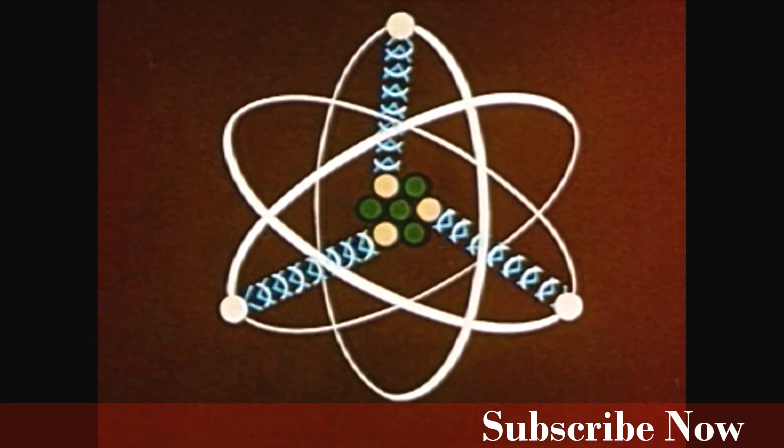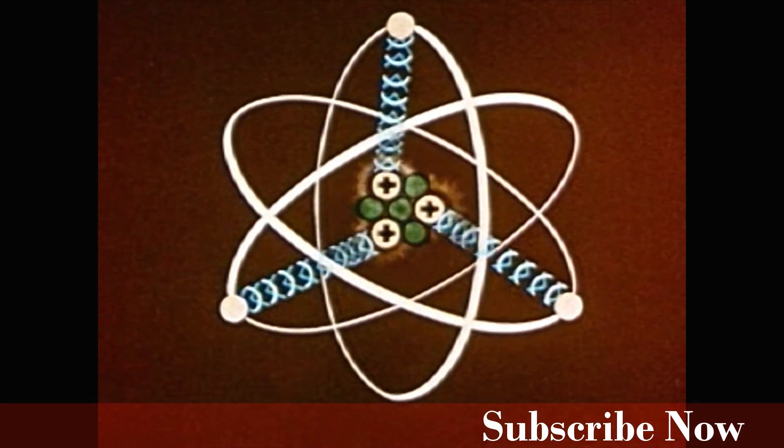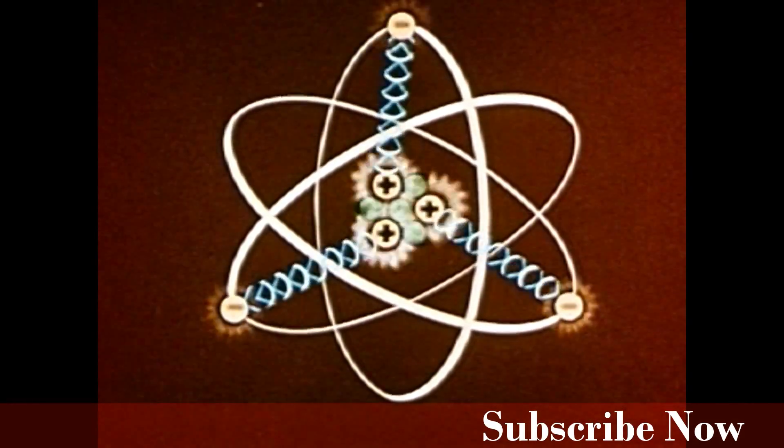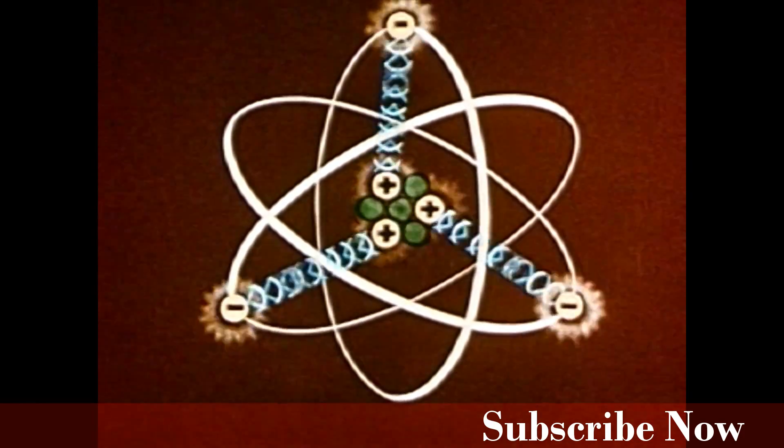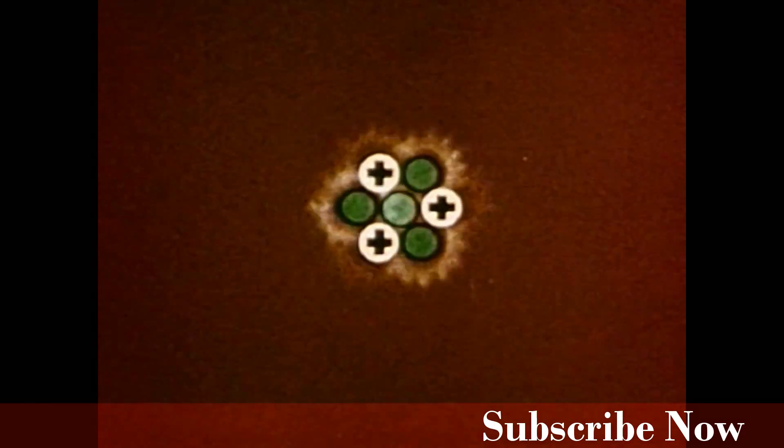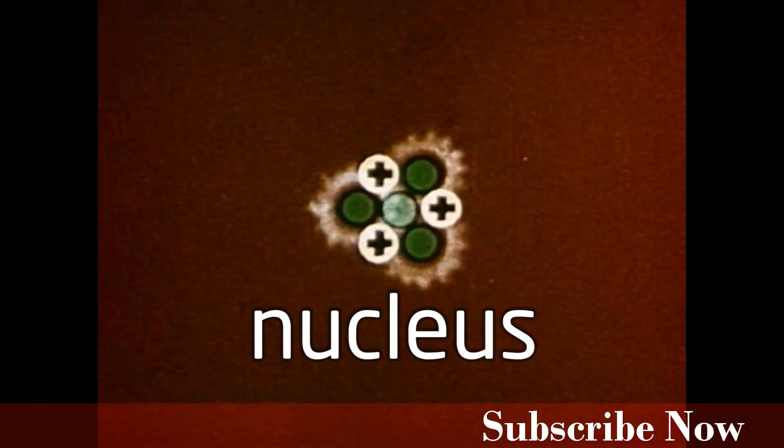Since every atom is electrically neutral, the number of protons in the nucleus must equal the number of electrons far away in the electron cloud. The protons and neutrons together make up the nucleus of the atom.